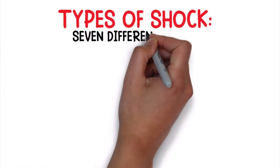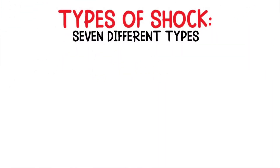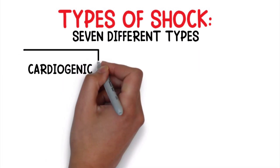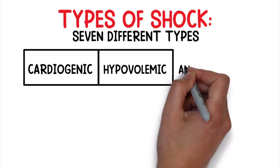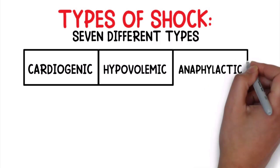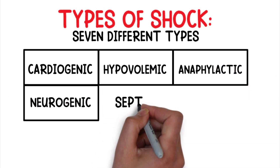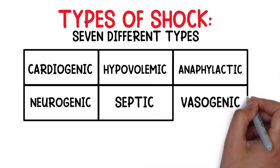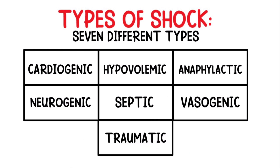Now let's talk about the different types of shock. There are seven different types to know about as a medical professional, and they are: Cardiogenic, Hypovolemic, Anaphylactic, Neurogenic, Septic, Vasogenic, and Traumatic. Each type falls under a different category depending on how the blood flow is affected.